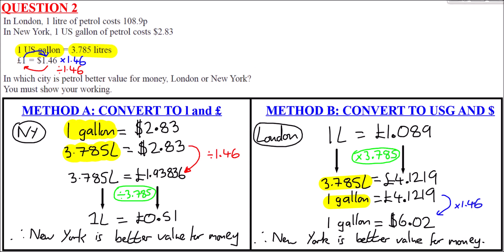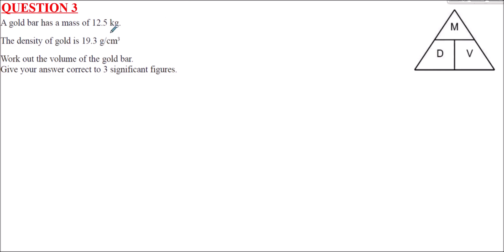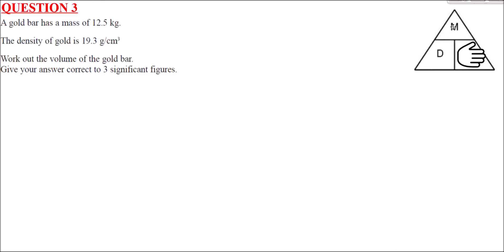Question 3 is about density, mass, and volume. A gold bar has a mass of 12.5 kilograms and the density of gold is 19.3 grams per cubic centimetre. We need to find the volume. Remember: density equals mass divided by volume. Using the magic triangle, covering up volume tells us: V equals M over D. But notice the units are not consistent — mass is in kilograms, density is in grams.